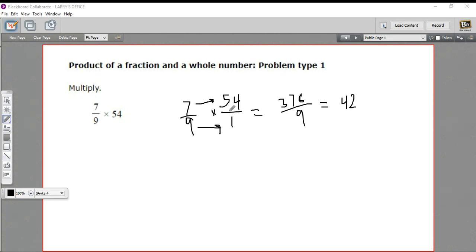I notice that 54 is divisible by 9. So if I take 54 and divide it by 9, this 9 will go away. The 54 divided by 9 is 6. So this is really 7 times 6 over 1, which of course is 42.